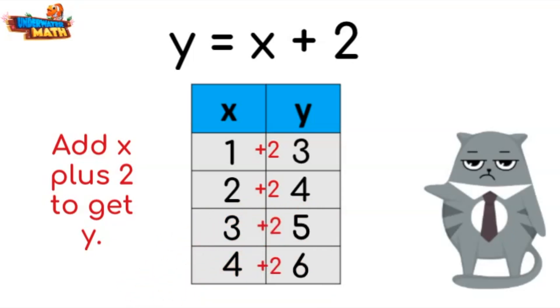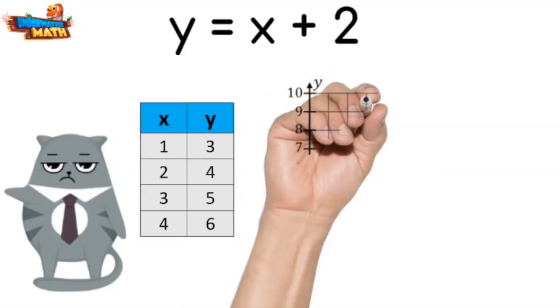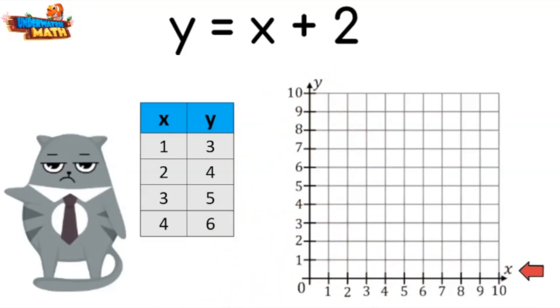Now that we have the table, how do we make the graph? Let's try it together grumpy kitty. The x coordinate corresponds to the horizontal line on the graph and the y coordinate to the vertical line. X is one, I move to the left one and up to the three for the y coordinate. There we go, I can also plot two and four, three and five, and four and six.